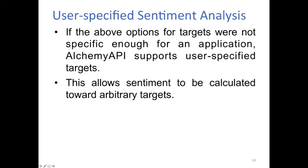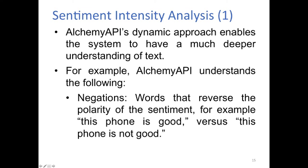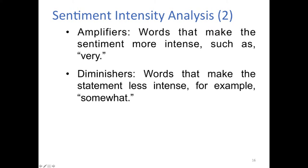User-specified sentiment analysis allows you to set arbitrary targets and work towards those if none of the other approaches work for you. You can also look at the intensity of a sentiment. Negations are words that reverse the polarity of sentiment — for example, 'this phone is good' becomes 'this phone is not good.' Amplifiers make the sentiment more intense, such as 'very,' while diminishers make it less intense, such as 'somewhat.'